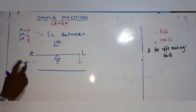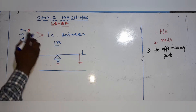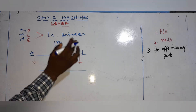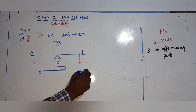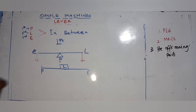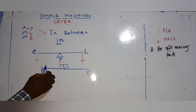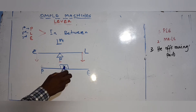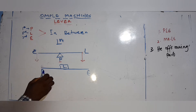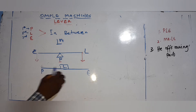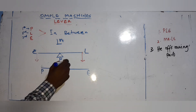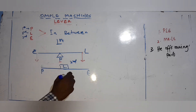For a second class lever, the load (L) should be in the middle. If the load is in the middle, it becomes second class. You can put the pivot on one end and the effort on the other end, or switch them — no matter what, if the load is in the middle, it is a second class lever.